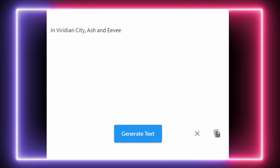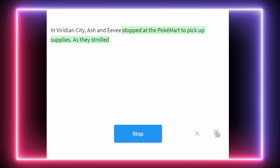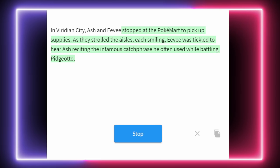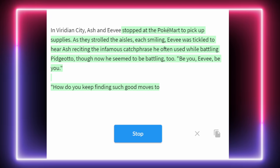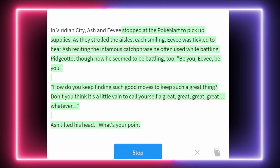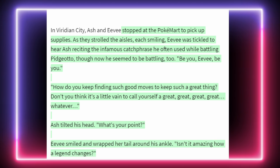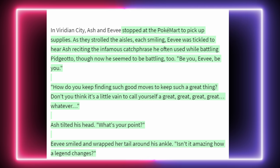There's usually not much to do in Viridian, so I'm giving it a pretty open prompt: 'In Viridian City, Ash and Eevee...' They stopped at the Pokémon Center to pick up supplies. As they strolled through the aisles, Eevee was tickled to hear Ash reciting his catchphrase. 'Be you, Eevee. Be you.' The Eevee smiled and wrapped her tail around his ankle. It turns out Eevee can talk — much like Meowth. Talking Pokémon are a lot more common in this particular universe. It's more like the trainer forms a bond and can hear their Pokémon. It's tough to say.